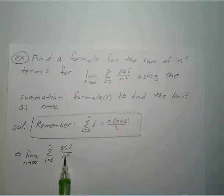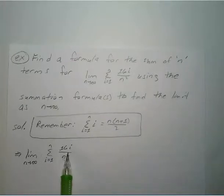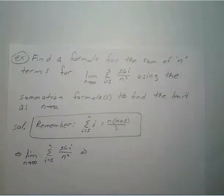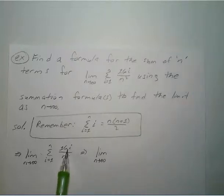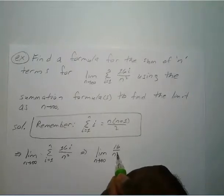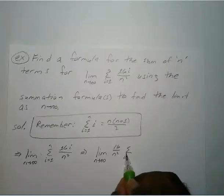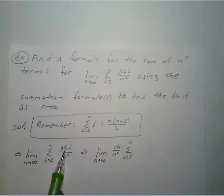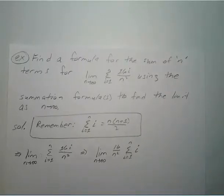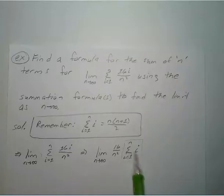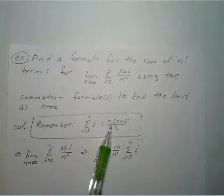What we're going to do is get everything that does not have an i and move it behind the summation, because this is all just being multiplied. So we move the 16 and the n squared out front: that's the limit as n approaches infinity of 16 over n squared times the sum from i equals 1 to n of i. We then replace that sum with n times n plus 1 over 2.